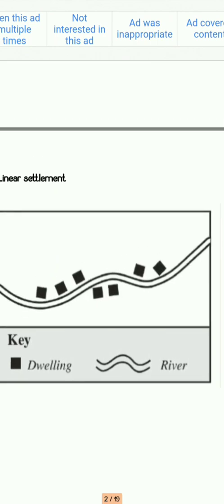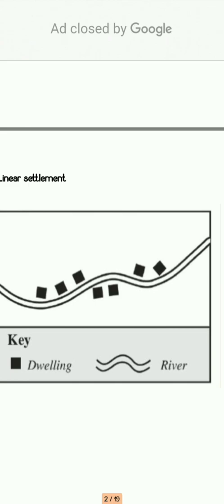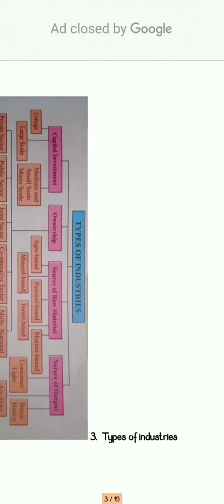The next question is linear settlements. Linear settlements are those settlements which are found in a straight line. You can show it in a straight line with proper labeling indicating whether it is a road, river, or railway line. You need to make proper labeling for it.